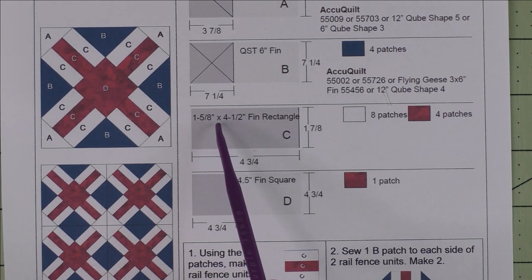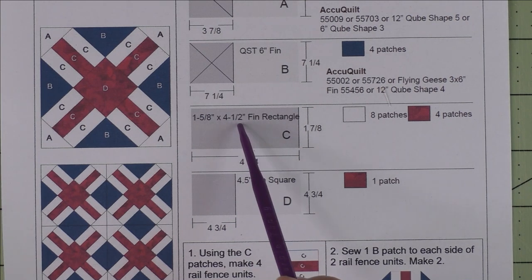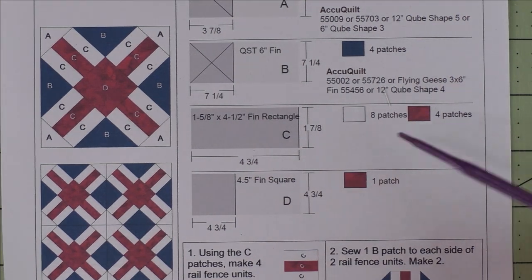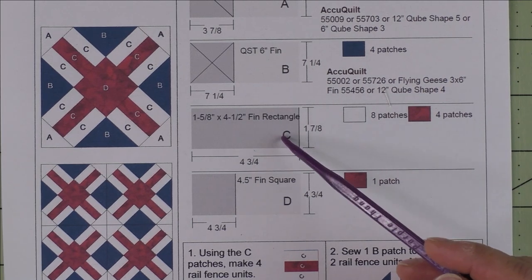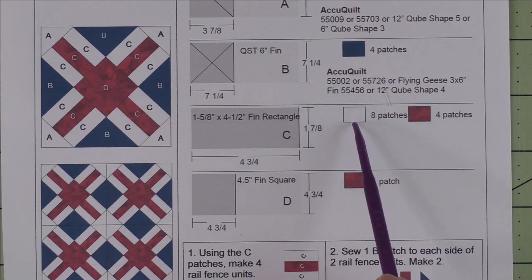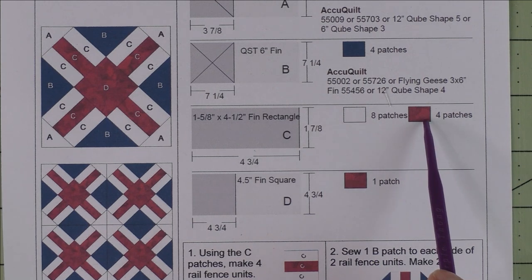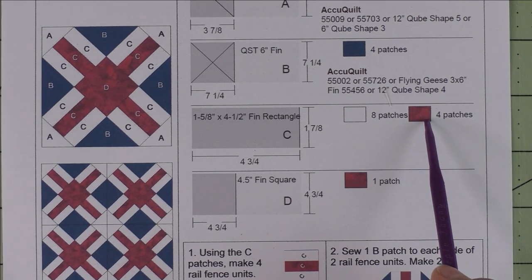So there is no AccuQuilt die for this—you'll have to hand cut these. We need eight patches of the white fabric and four patches of the red fabric. These are the little rails here, little rail fence units.